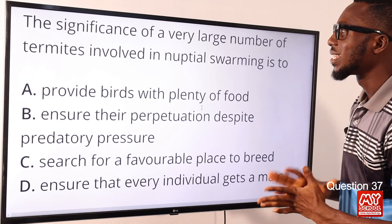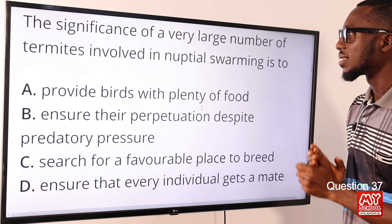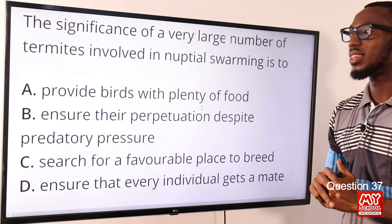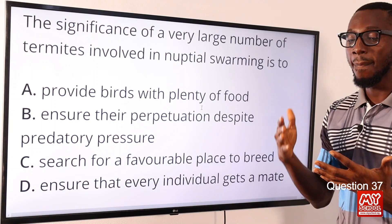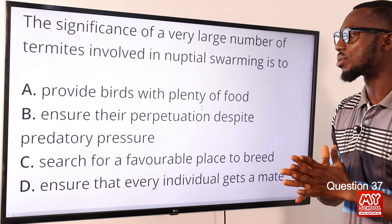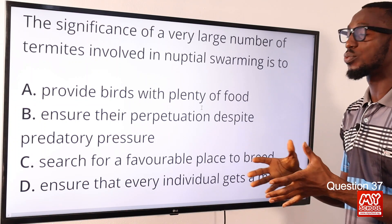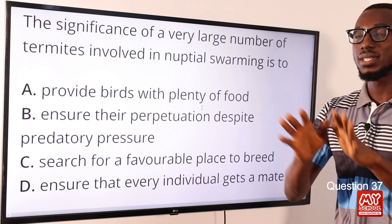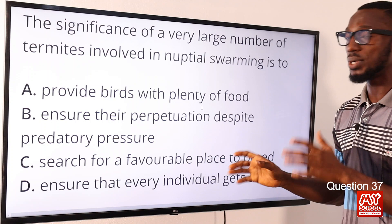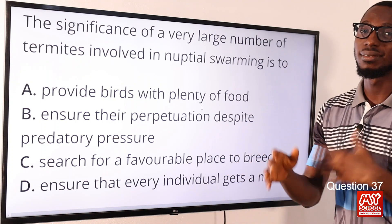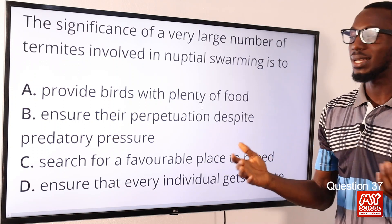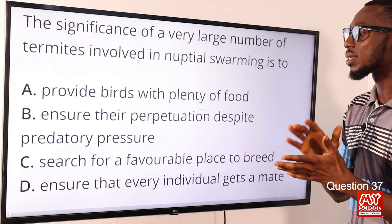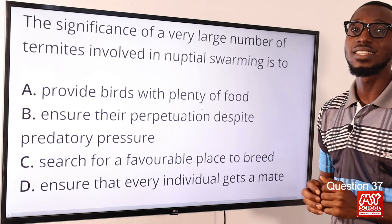Question 37. The significance of a very large number of termites involved in nuptial swarming is to search for a favorable place to breed. This occurs when large numbers of male and female reproductives with wings swarm together. During this flight, known as the nuptial or wedding flight, a male and a female isolate themselves in pairs, look for a suitable place, land, their wings break off, they start digging tunnels, and about a week later they start mating and form a new colony. So the main purpose for nuptial swarming is to search for a favorable place to breed. Option C is the correct option.